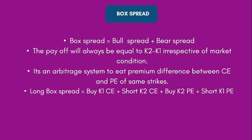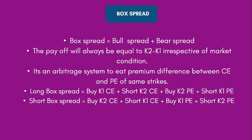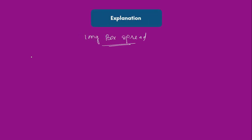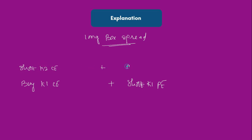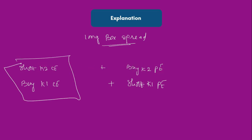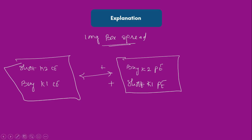There are two types of box spread: long box spread and short box spread. Long box spread is: buy K1 call, short K2 call, buy K2 put, and short K1 put. The reverse is short box spread: buy K2 call, short K1 call, buy K1 put, and short K2 put. In long box spread, buying K1 call plus shorting K1 put forms bull spread, and shorting K2 call plus buying K2 put forms bear spread — you mix both to get box spread.